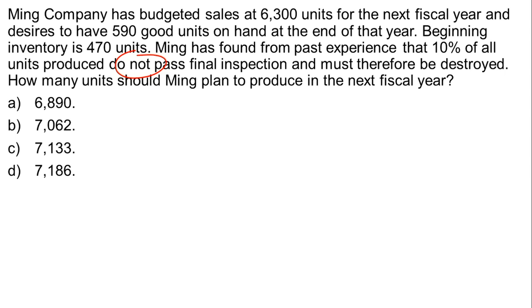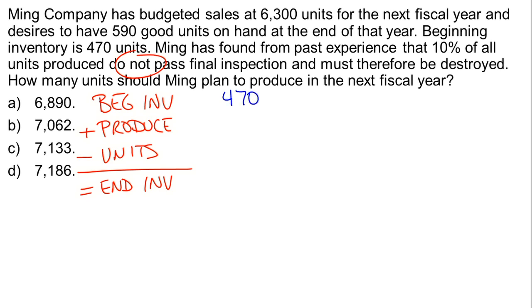We can put this together in just a very simple formula. If we take beginning inventory and we add to that what it is that they're going to produce, and we subtract from that the number of units that are going to be sold—we've got some number that is going to be sold, we're told what that budgeted number is—that's going to be equal to our ending inventory.